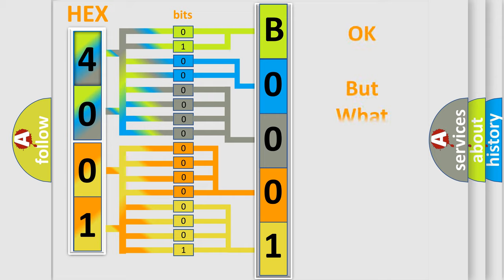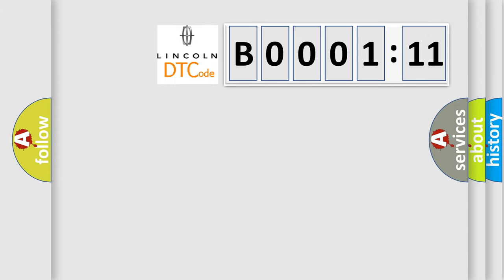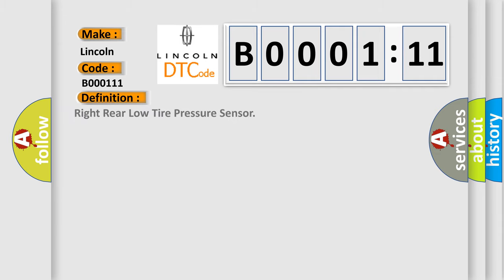The number itself does not make sense to us if we cannot assign information about what it actually expresses. So, what does the diagnostic trouble code B000111 interpret specifically for Lincoln car manufacturers? The basic definition is: right rear low tire pressure sensor.